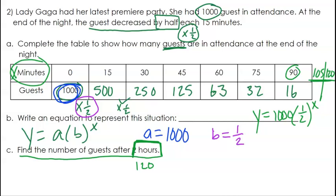So I can just extend this table by cutting 16 in half would give me 8. And then 8 and a half would be 4. So I know that after 2 hours, there would only be 4 guests left at the party.